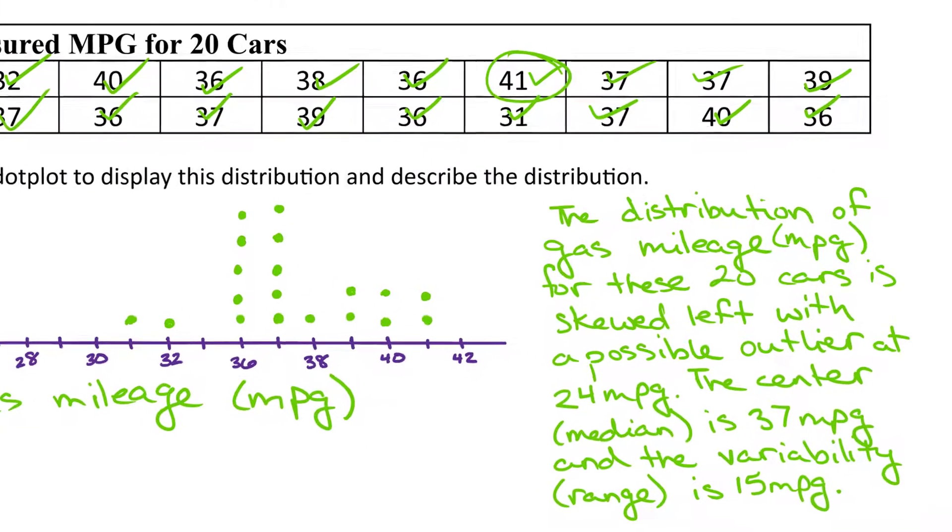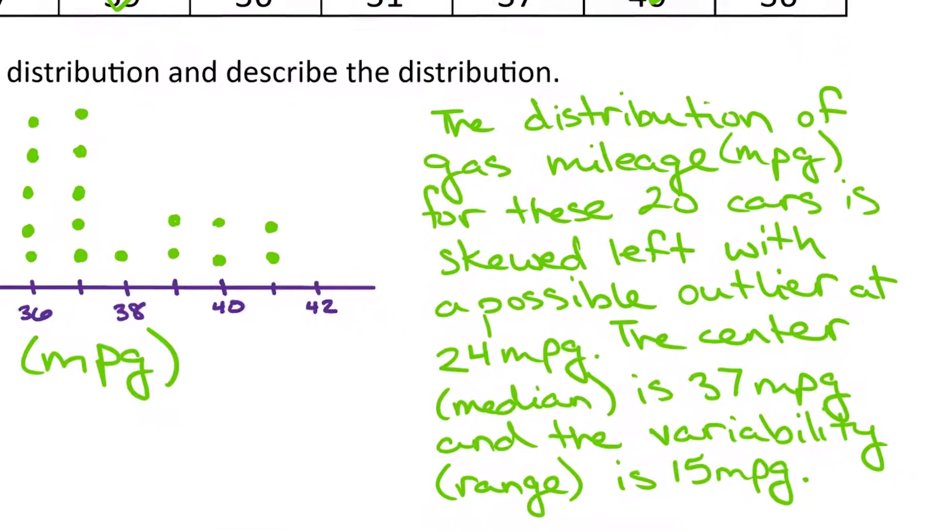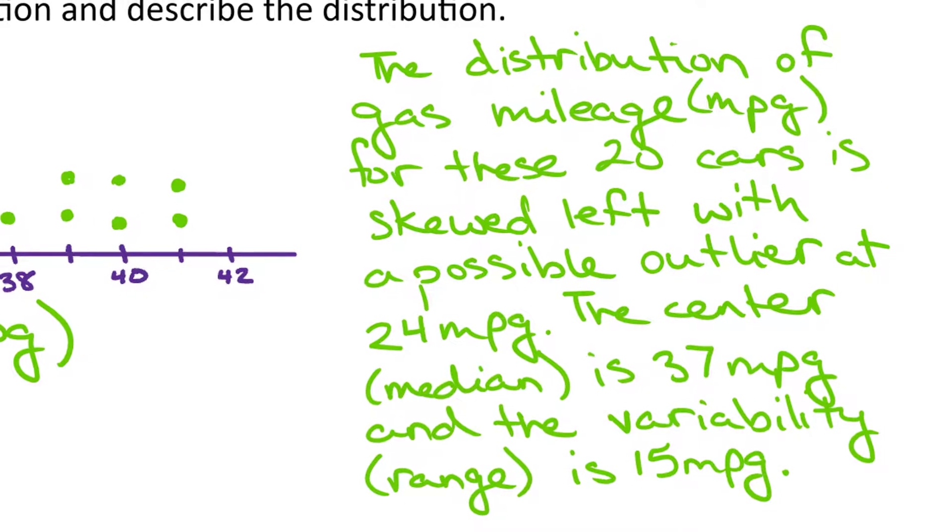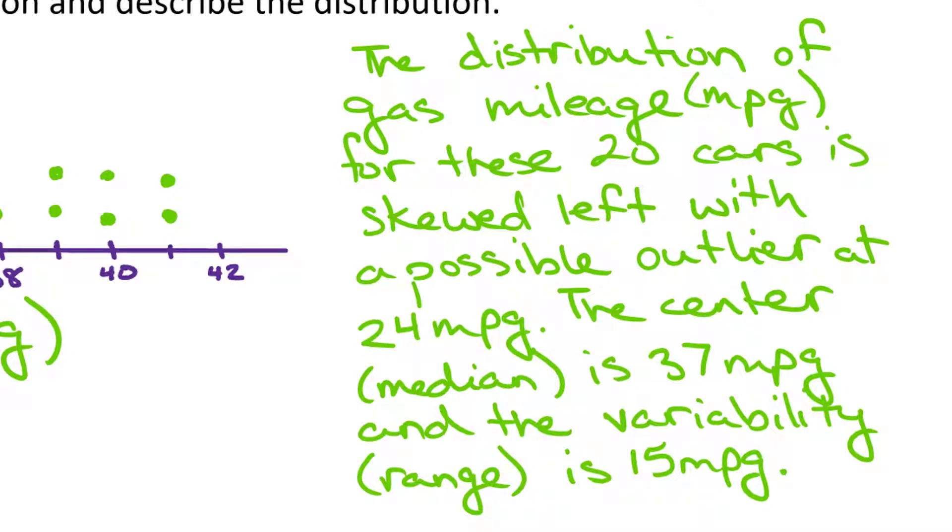To describe this distribution, we would say the distribution of gas mileage, MPGs, for these 20 cars is skewed left with a possible outlier at 24 MPG. The center, the median, is 37 MPG. And the variability, we're going to use our range, is 15 MPG.